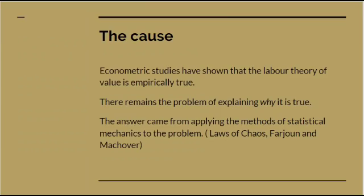So why is it? We know that the labour theory of value is empirically true. There remains the problem of explaining why it is true. We didn't get an answer to that until a couple of mathematicians started to apply the methods of statistical mechanics to the problem of the law of value. This was laid out in a book called The Laws of Chaos, published in 1984 by two mathematicians, Farjoun and Machover.